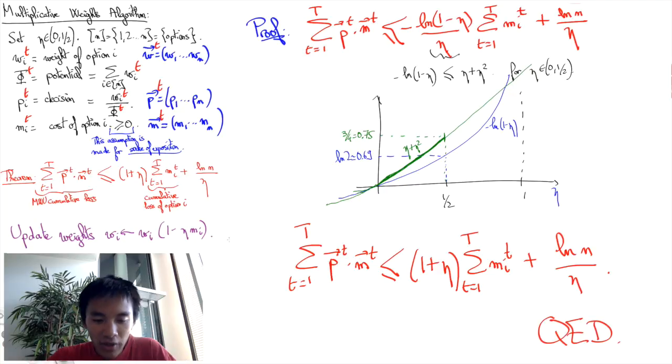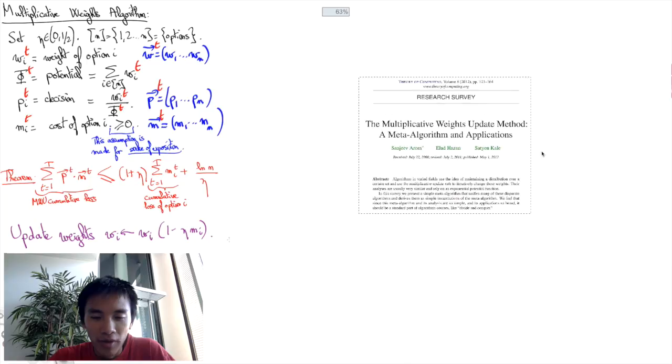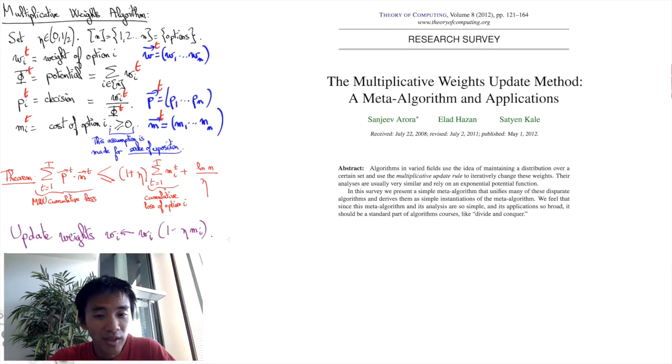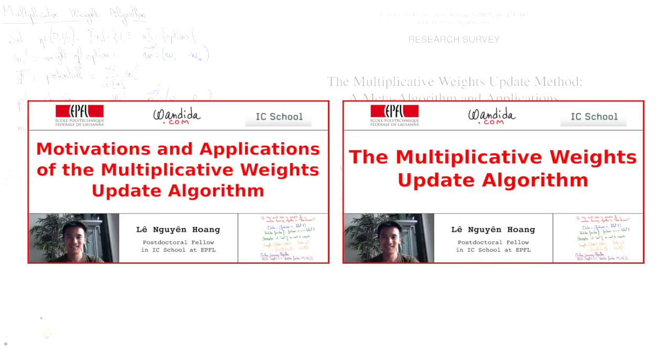Now to conclude, I need to say that there is a more general version of this theorem where the costs needn't be non-negative, and I strongly encourage you to go through the excellent research survey by Arora, Hazan, and Kale published in Theory of Computing 2012, which is very easy to find online. I'll put a link in the description.